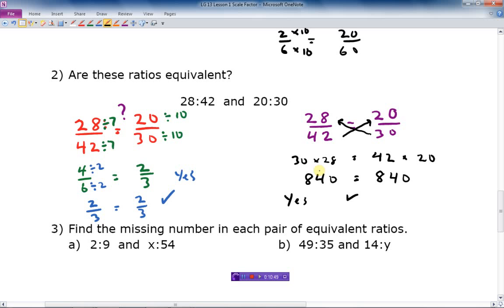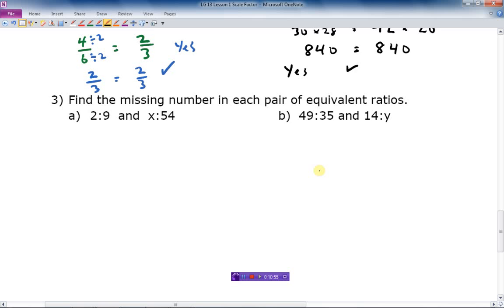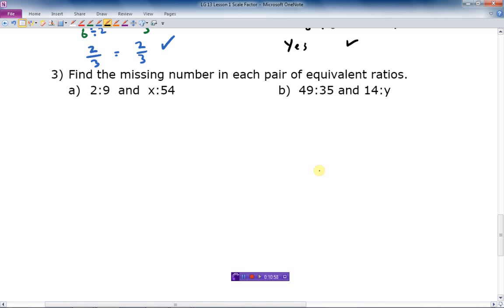Last examples here. We want to find, it was like the one I did earlier. Find the missing number. So how do we do that? What I told you to do was to take and write them as fractions. And they're equivalent. So we can put an equal sign between them. X over 54. And then we can just cross-multiply. So we do that. I'm going to do 9 times X first. I get 9X. And then 2 times 24 is 108. And what I'm going to do, how do I finish it off here? Well, I'm going to divide by 9 to get X by itself.